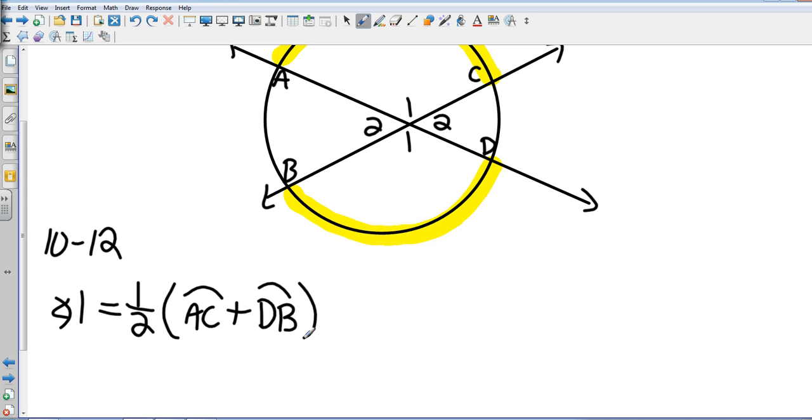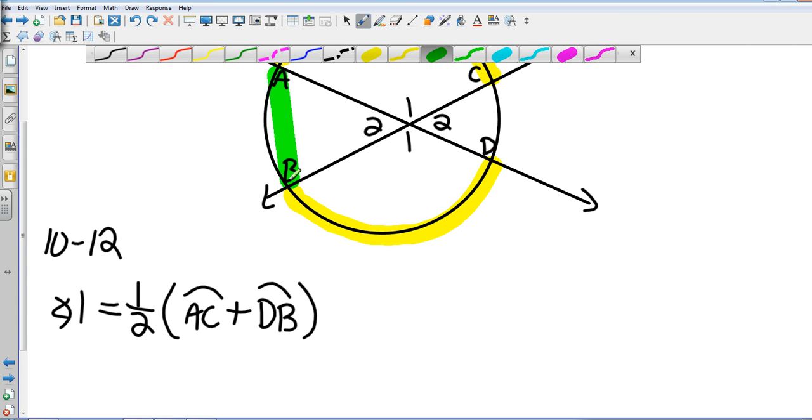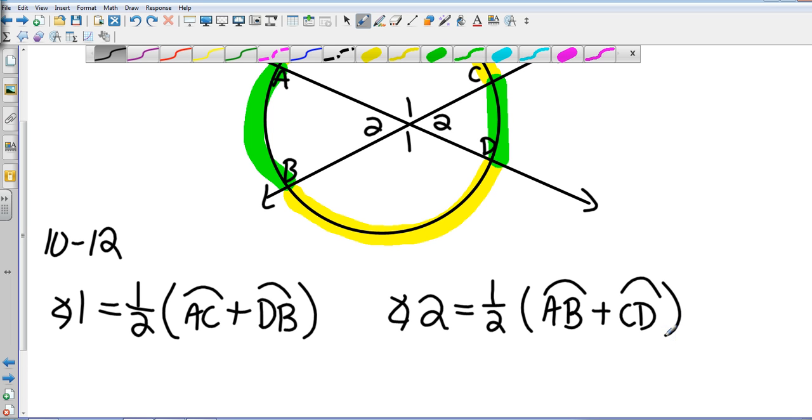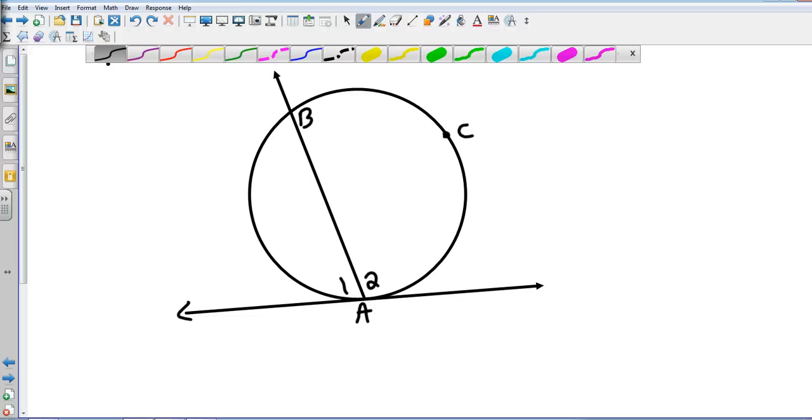So angle 1 is one half of the two arcs intersected together. So that means angle 2, we need to find the arcs that angle 2 intersects and that's going to be this arc and also this arc. So angle 2 is going to be one half of arc AB added to arc CD. One half of the intercepted arc.